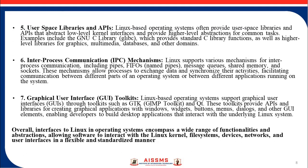Next is user space libraries and APIs. Linux-based operating systems also provide user space libraries and APIs that abstract low-level kernel interfaces and provide higher-level abstractions for common tasks. For example, the GNU C library (GLIBC) provides standard C library functions as well as higher-level libraries for graphics, multimedia, databases, and other domains. Next is inter-process communication (IPC) mechanisms. Linux supports various IPC mechanisms including pipes, named pipes (FIFO), message queues, shared memory, and sockets. These mechanisms allow processes to exchange data and synchronize their activities, facilitating communication between different parts of an operating system or between different applications running on the system.